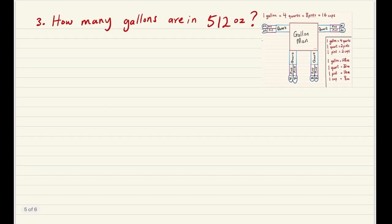The question says how many gallons are in 512 ounces? From the table we can see that 1 gallon is equal to 128 ounces. So I'm just going to write that down and then we're going to start answering the question. 1 gallon is equal to 128 ounces. And now we're being asked how many gallons are in 512 ounces.